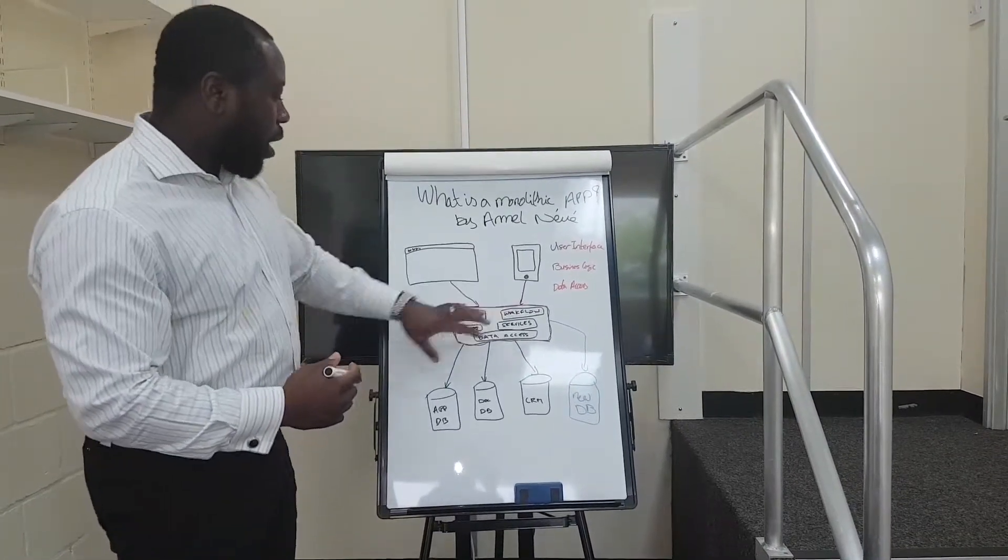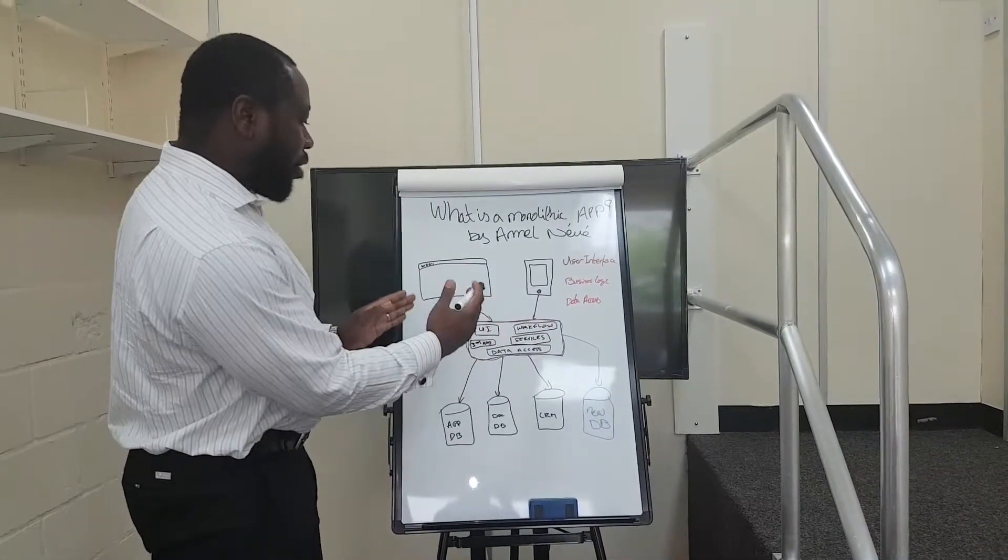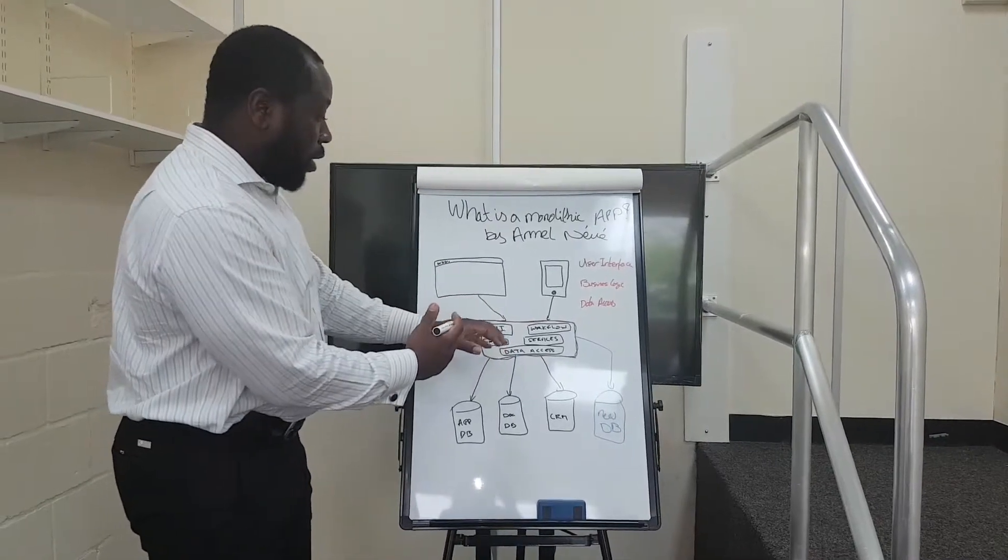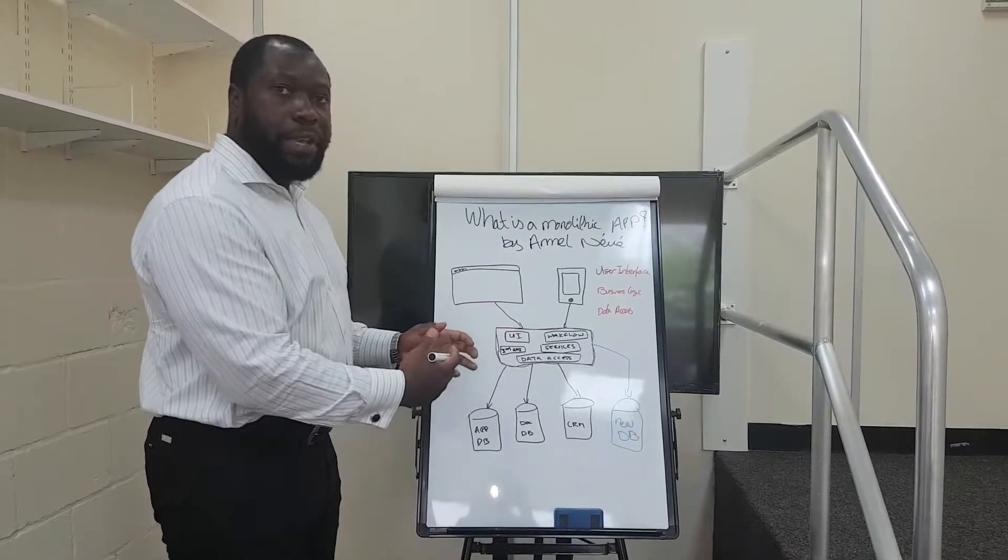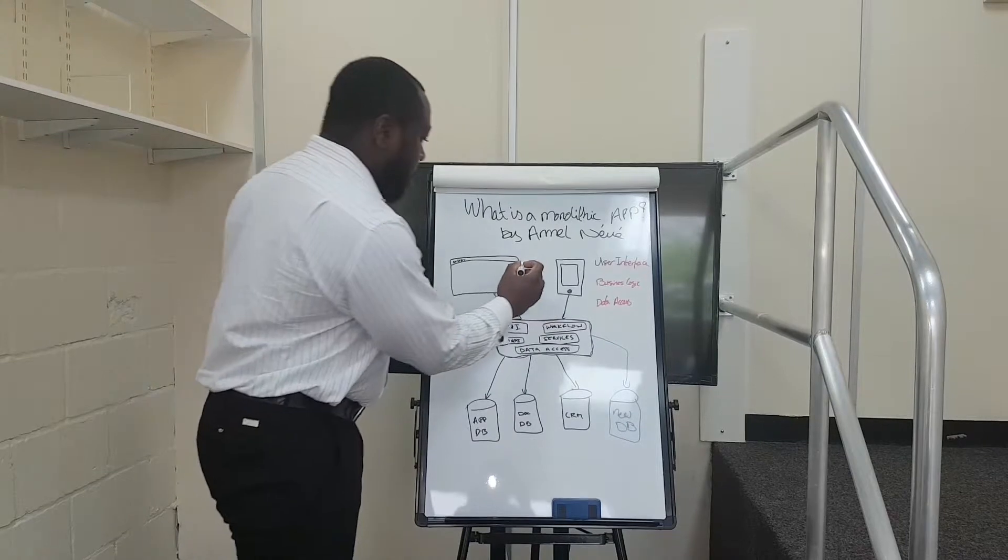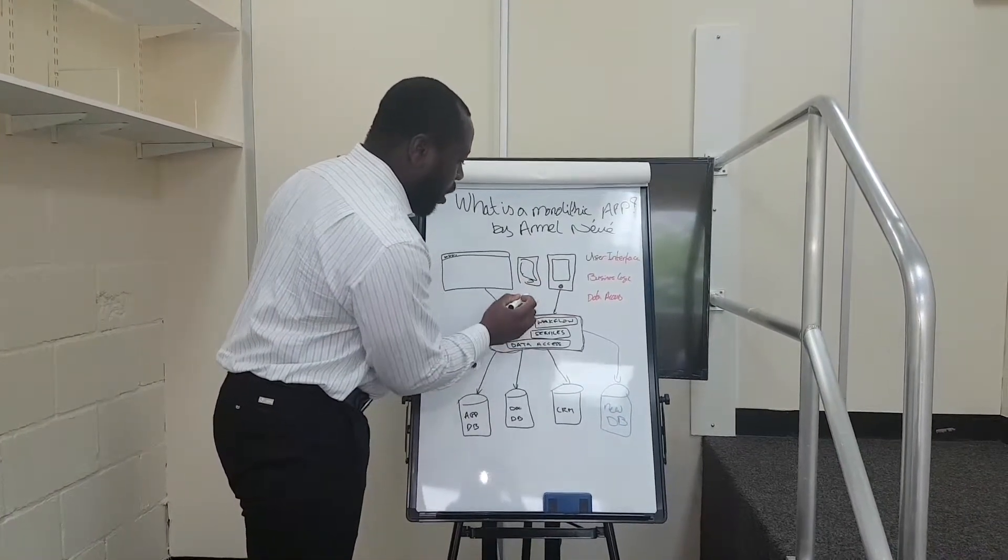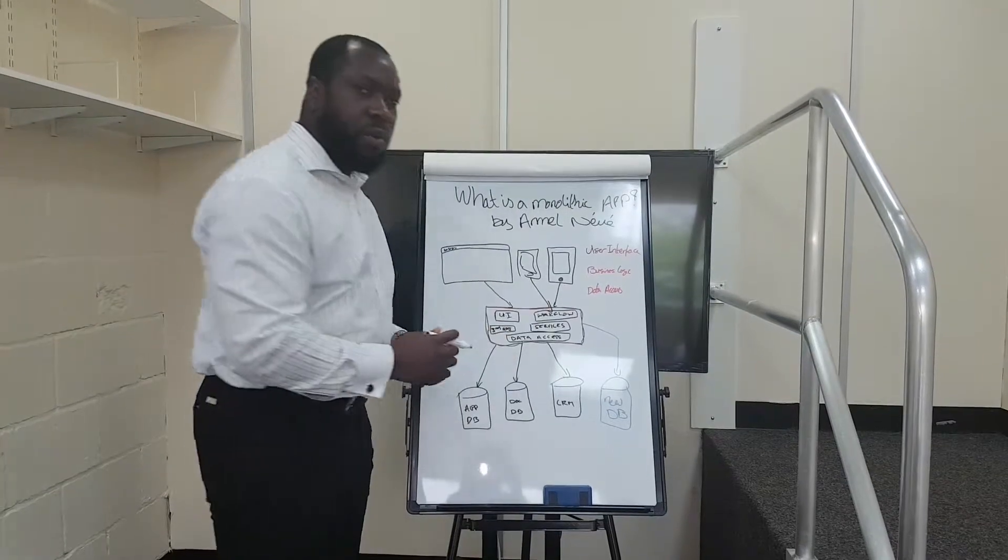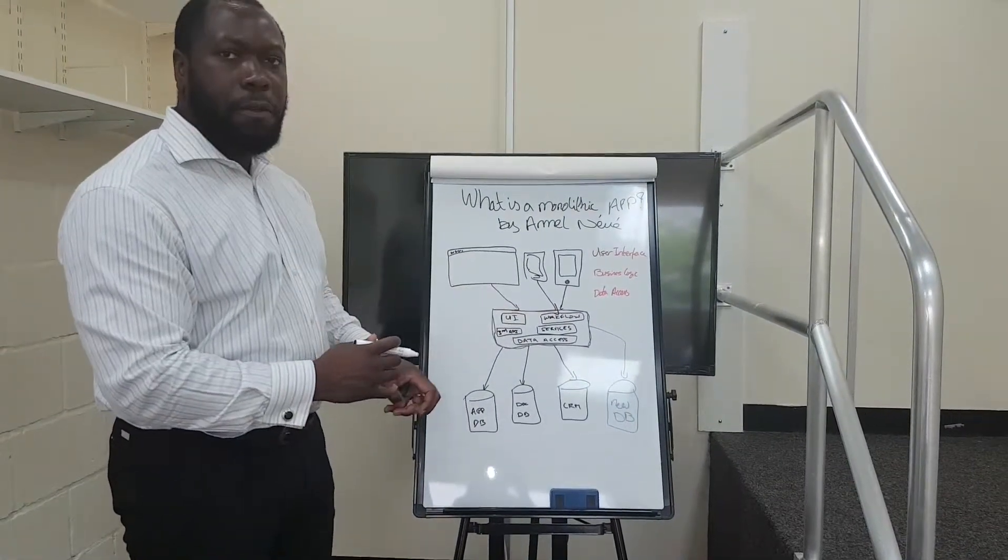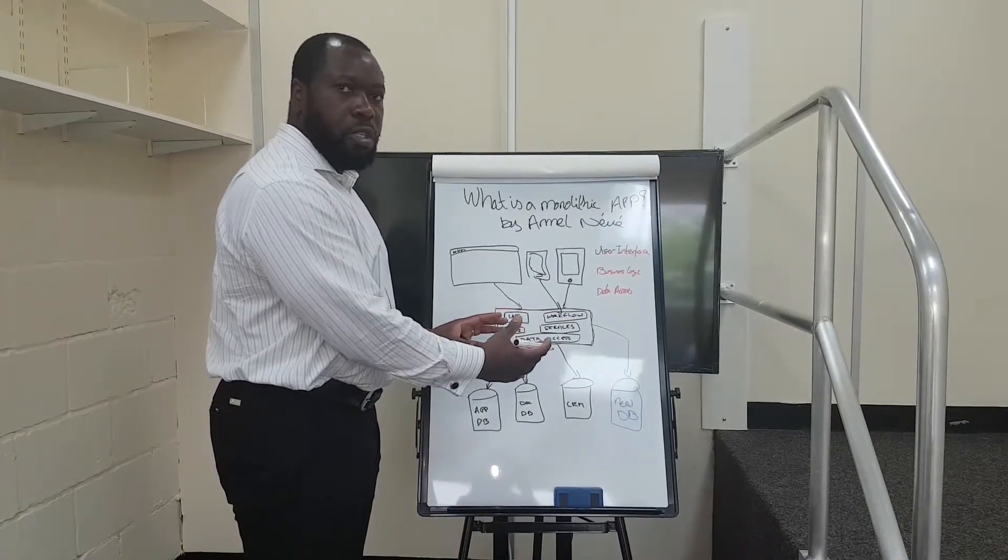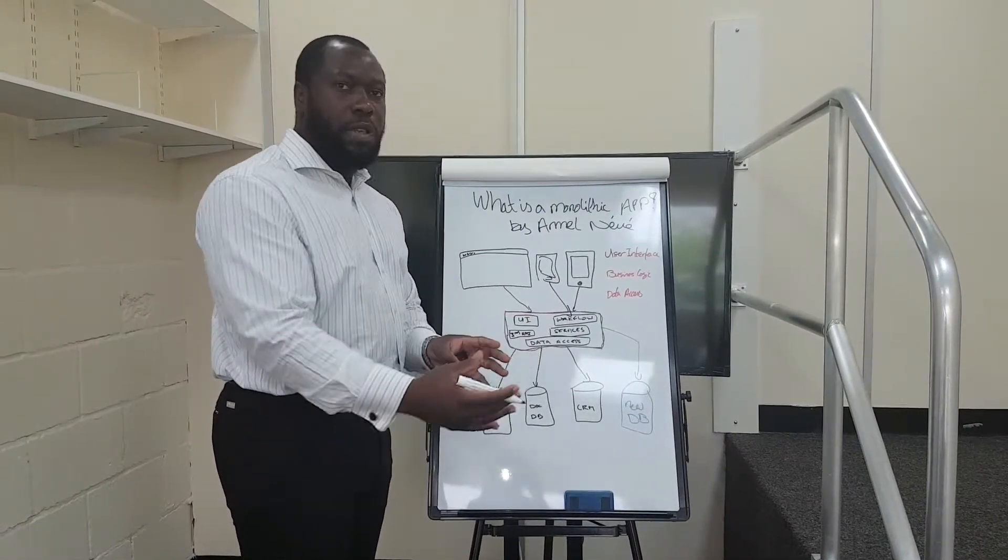If this architecture was actually separated in different services, if you could access the workflow through an API, you could create a new interface, a new client, that will go directly and work with the workflow because that's all this client needs. But at the moment, you have to deploy everything at once as a big block of code.